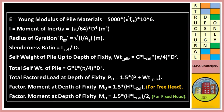E (Young's modulus of pile material) = 5000 × √fck × 10⁶ N/m². Moment of inertia I = π/64 × D⁴. Radius of gyration = √(I/Ag). Slenderness ratio = length of column divided by D. Self weight of pile up to depth of fixity: Wwt = g × Lc × π/4 × D². Self weight of full pile = g × L × π/4 × D².